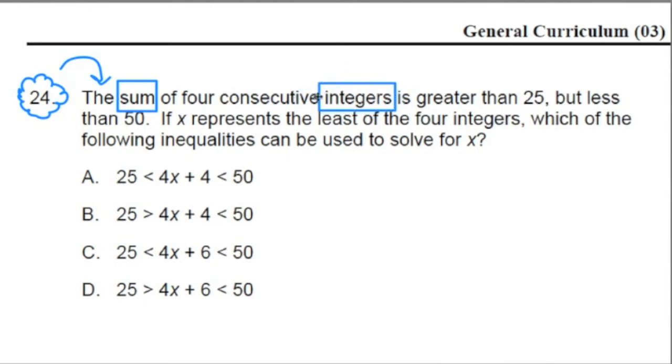An integer is a number that's divisible by one with no remainder. These are the numbers found on a number line and they can be positive, negative, or zero. The word consecutive means these four numbers go one after another, like one, two, three, four. They're consecutive. So we got four integers that are consecutive that we're adding together.